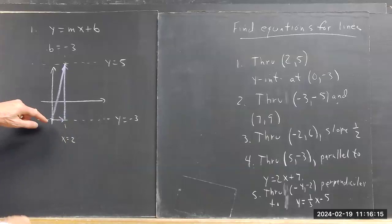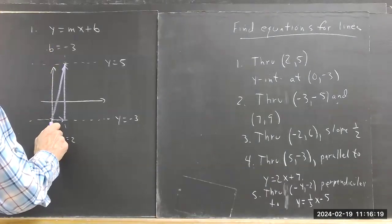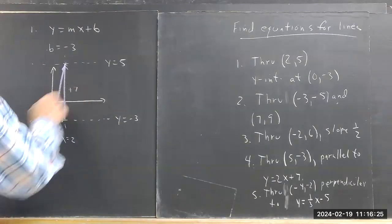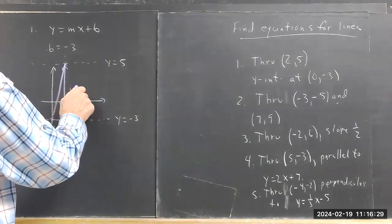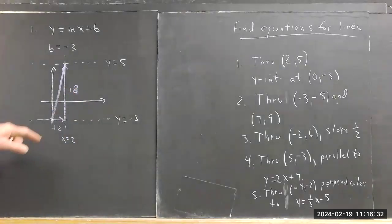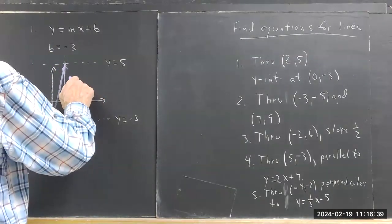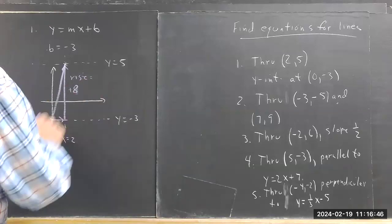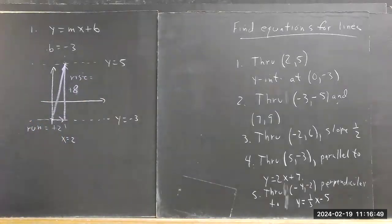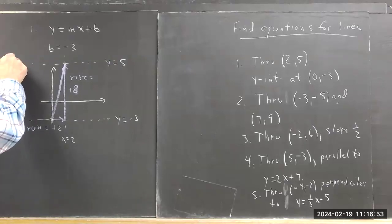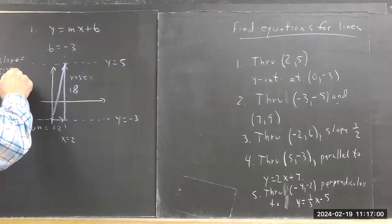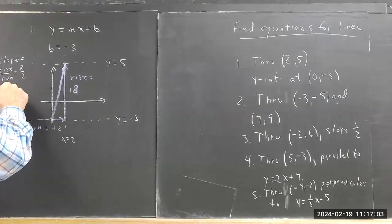In order to get from this point to this point, you've got to move plus 2 in this direction and plus 8 in this direction. So it's plus 2 here and plus 8 here. Now this is the rise. This is the run. So the slope is rise over run — equals 8 over 2, equals 4.